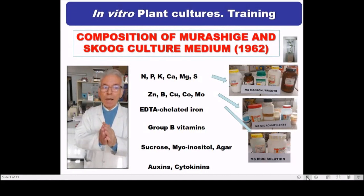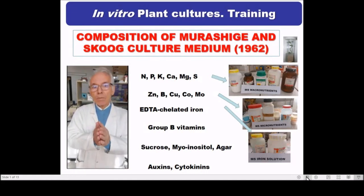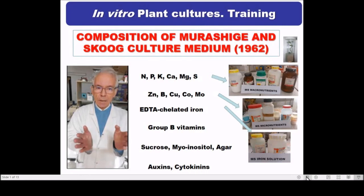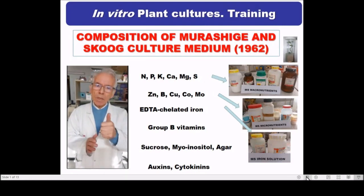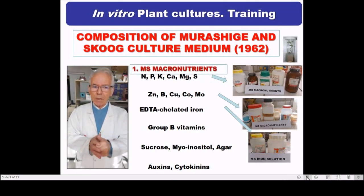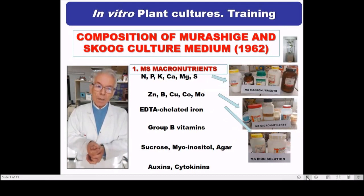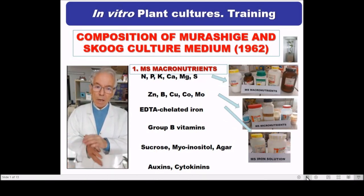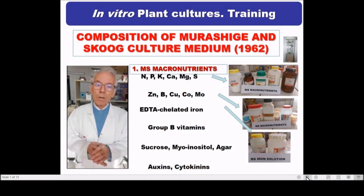When deciding to carry out in vitro plant culture using Murashige and Skoog 1962, you need some components. Firstly, you need what we call macronutrients, or macro elements, that are needed in high quantities for plant growth. Examples are nitrogen, phosphorus, potassium.